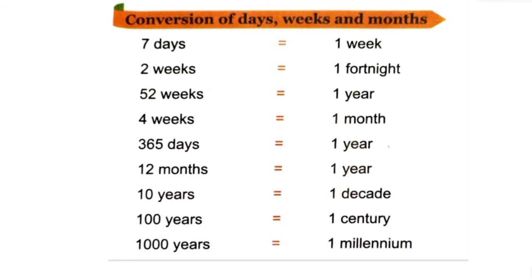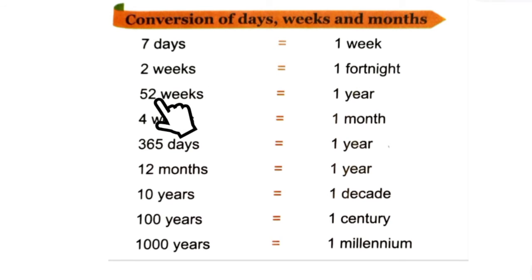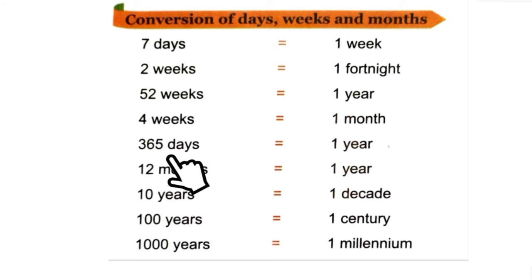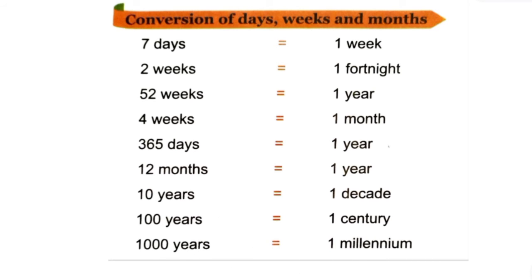Next is an important table given in your book — please learn it. 7 days equals 1 week; 2 weeks equals 14+1, that is 15 days; 52 weeks equals 1 year; 4 weeks equals 1 month; 365 days equals 1 year; 12 months equals 1 year; 10 years equals 1 decade; 100 years equals 1 century; 1000 years equals 1 millennium. This is a very important table as it will help you solve your questions, so please learn it.